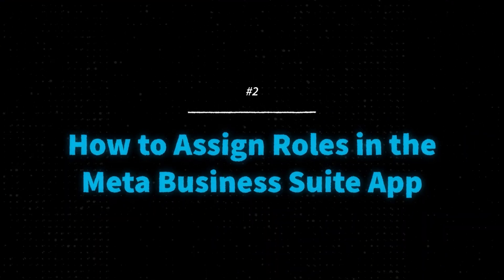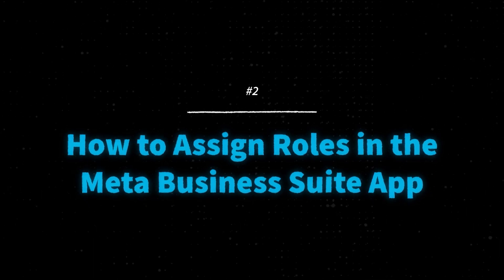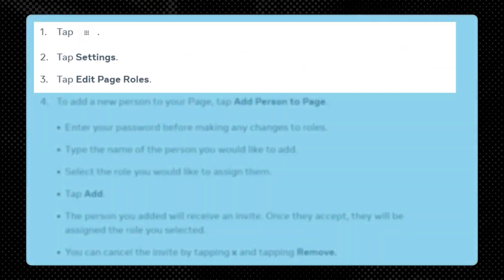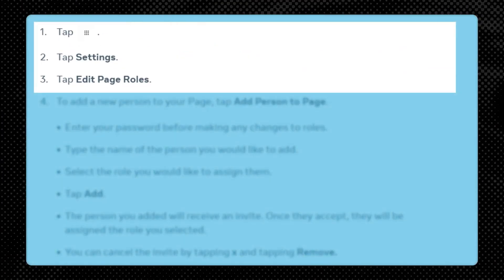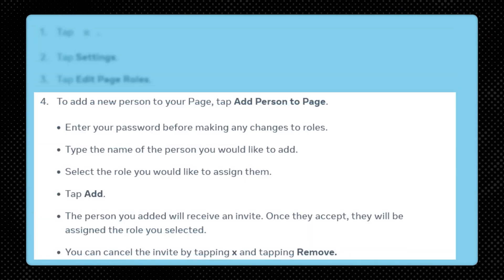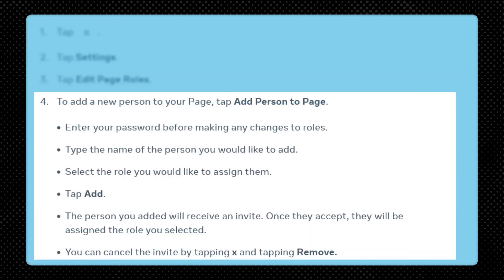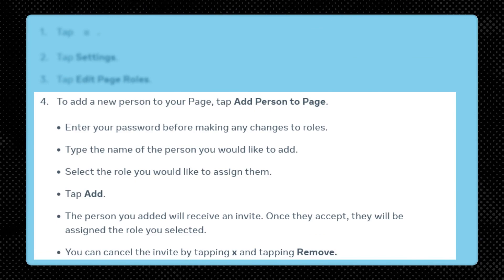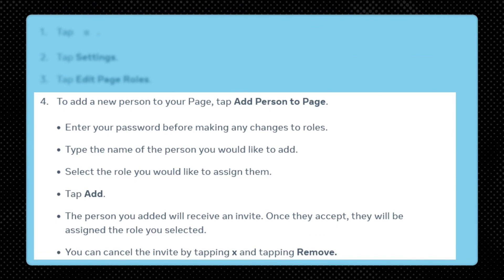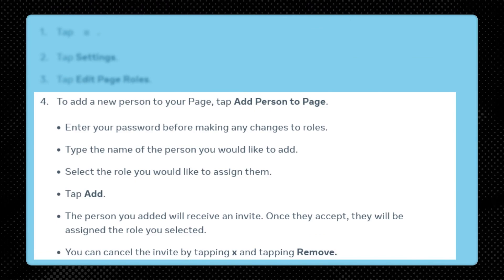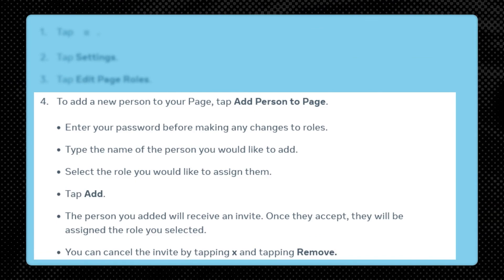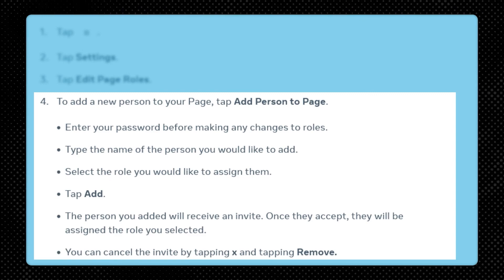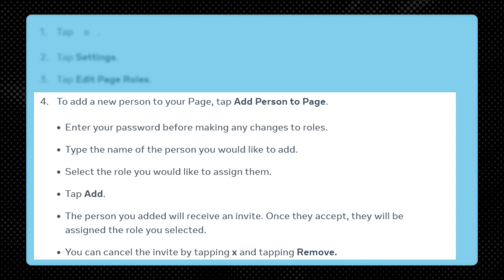Let's cover how to assign roles in the Meta Business Suite app. Tap the grid icon, tap Settings, and tap Edit Page Roles. To add a new person to your page, tap Add Person to Page — it may make you enter your password before you can change any roles. Type the name of the person you would like to add, select the role you would like to assign them, and then tap Add.